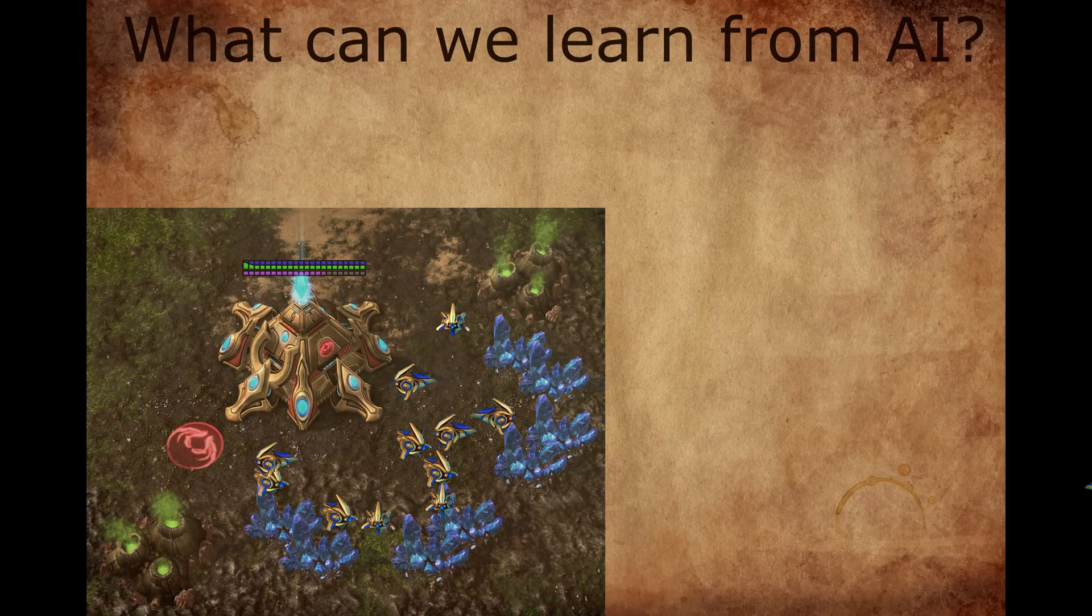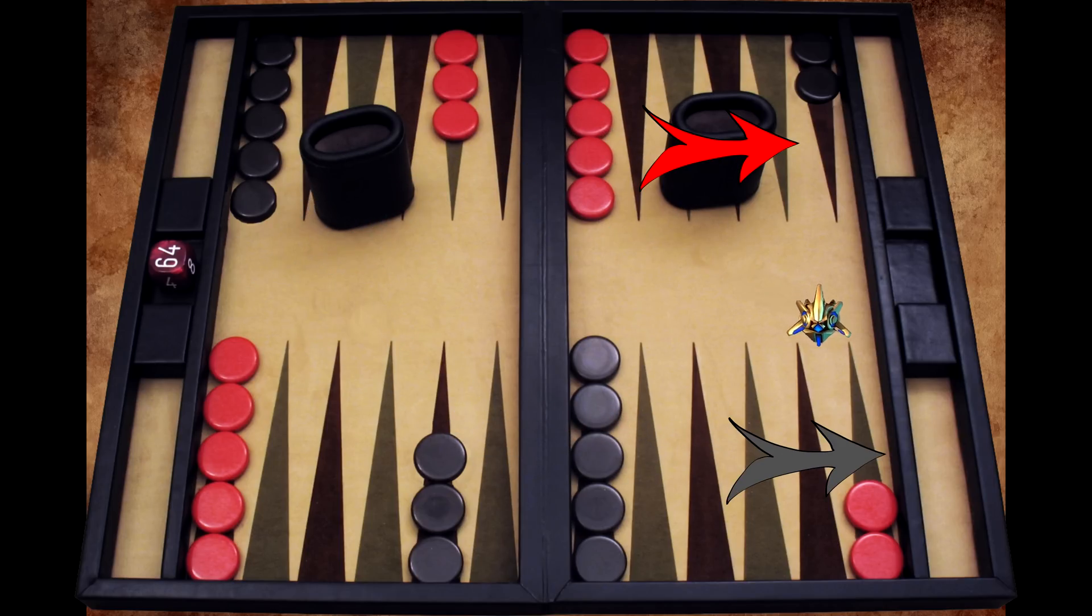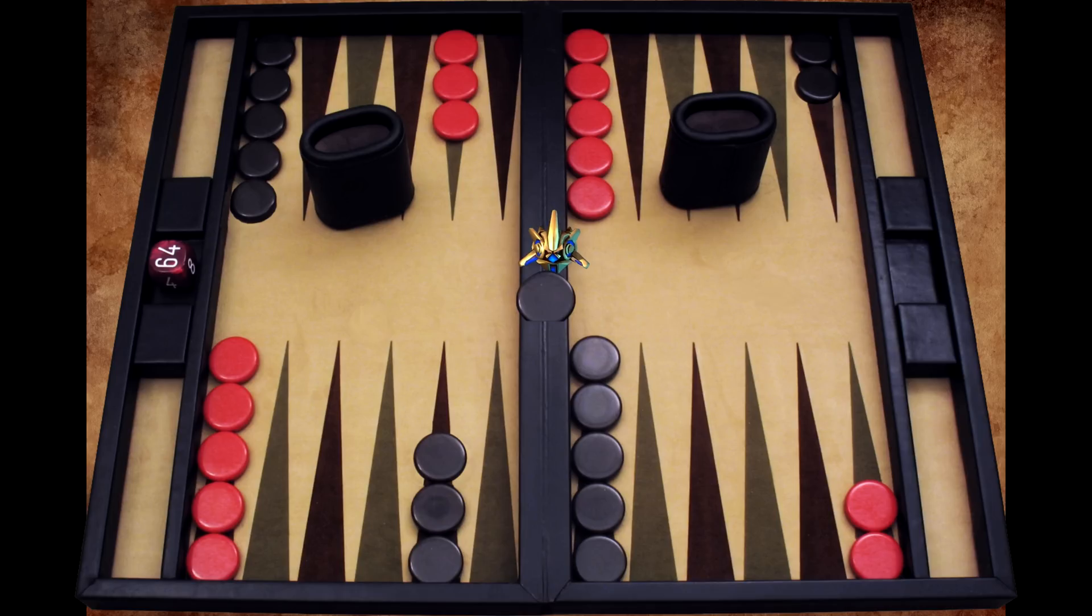This isn't the first time an AI system has taught us a new strategy. Consider Backgammon, an ancient board game dating back thousands of years. Quick crash course for those of you who don't know the game. The basic goal is to move your tokens around the board past your opponent. Groups of tokens are safe, but your opponent can land on a solo token and capture it, sending it back to the start.